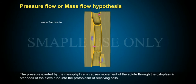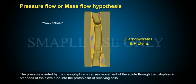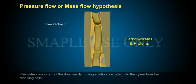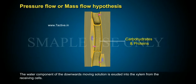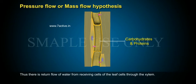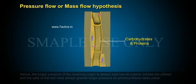The pressure exerted by the mesophyll cells causes movement of the solute through the cytoplasmic strands of the sieve tube into the protoplasm of receiving cells. The water component of the downward-moving solution is exuded into the xylem from the receiving cells. Thus, there is a return flow of water from receiving cells to the leaf cells through the xylem.